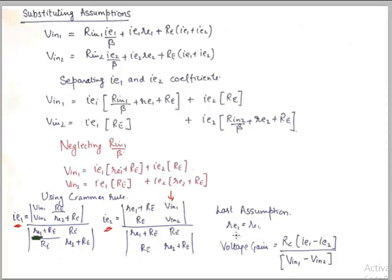So finally we have found our IE1 and IE2, and the last assumption could be to use RE1 to be equivalent to RE2 because of the matched transistors. The voltage gain becomes RC into IE1 minus IE2 upon Vin1 minus Vin2, which was discussed in the first step, and that's how you find the voltage gain using AC analysis of the differential amplifier. And I hope you liked the video and if you did please consider subscribing to the channel, share this video amongst your friends, and if you have any doubts ask them in the comment section. I'll see you around in the next video to come. Till then take good care of your health and stay happy, bye.